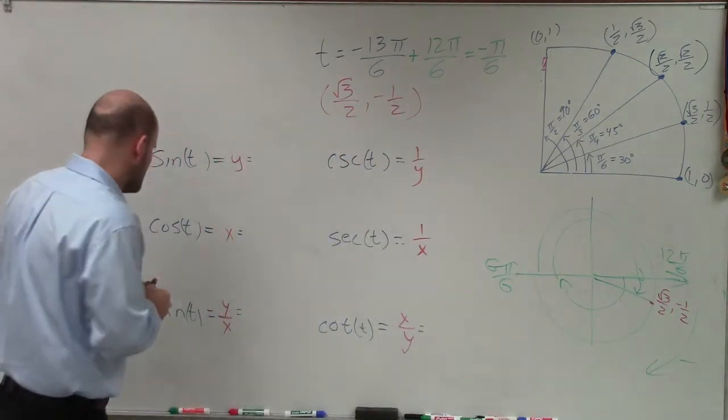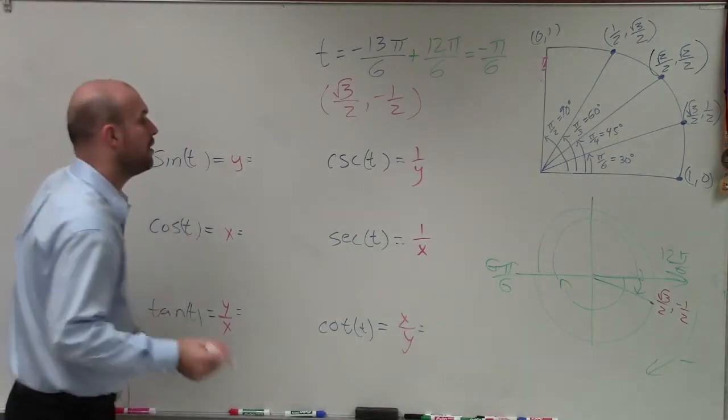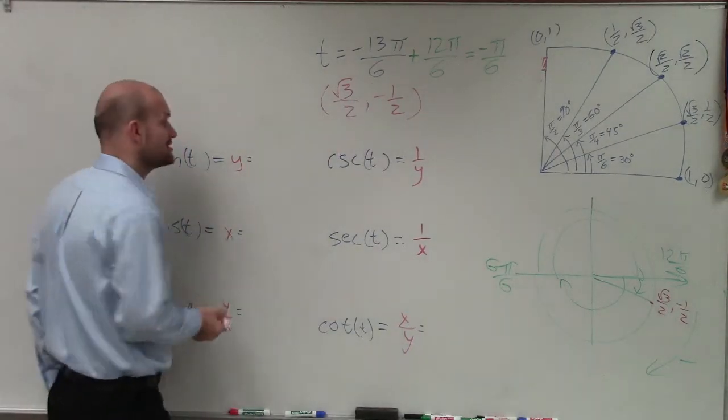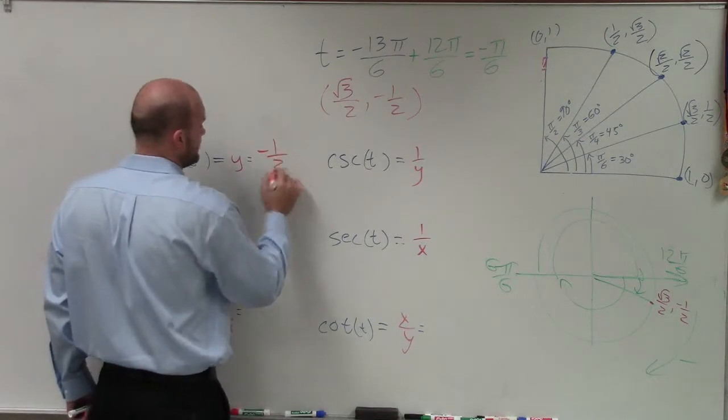All right, so when evaluating for sine, remember sine represents the y-coordinate of our point where our angle intersects the unit circle. So that's just going to be a negative 1 half.